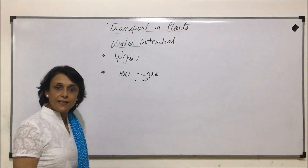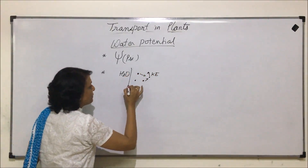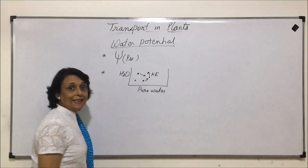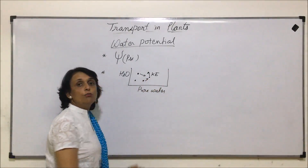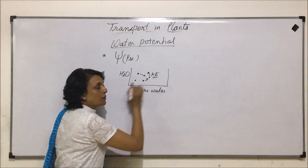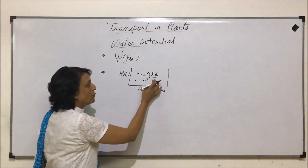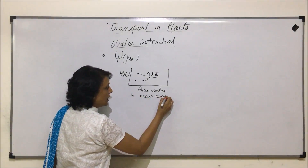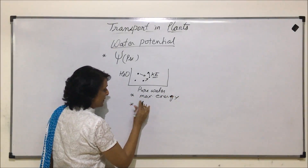Moving particles have kinetic energy, so water also has kinetic energy. If we take pure water, that means this is the liquid in which water molecules are maximum. And if they are maximum, they would have maximum energy. If they have maximum energy, the potential to do work would also be maximum. So pure water has maximum energy, or we can say maximum potential.